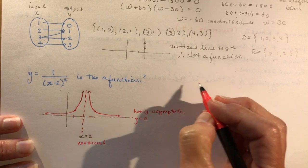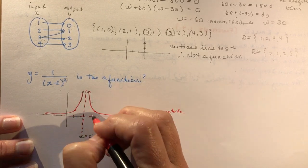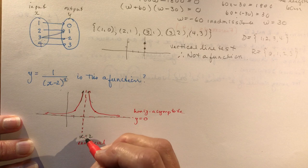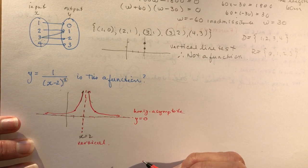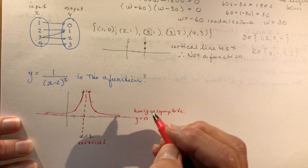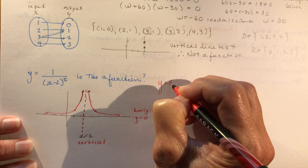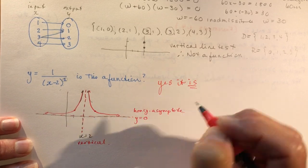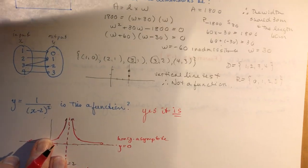So is it a function? Absolutely it's a function. If I did the vertical line test, just because it doesn't exist at x equals two, it doesn't mean it is not a function. So your answer is yes it is, it is a function.